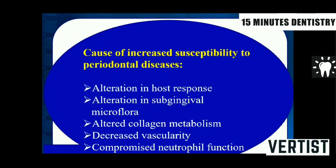Additional causes of increased periodontal susceptibility in diabetes include altered collagen metabolism, decreased vascularity due to hindered microcapillaries, and compromised neutrophil function. Greenspan syndrome has come up in MCQs — it should be noted as obsolete but historically it is a triad of diabetes mellitus, hypertension, and a third component. Remember the name for exam purposes.